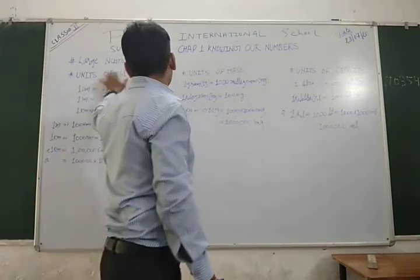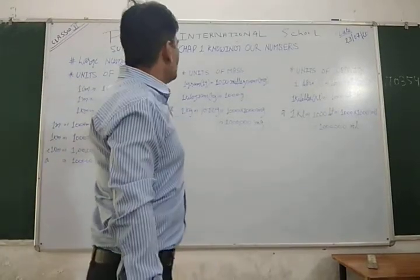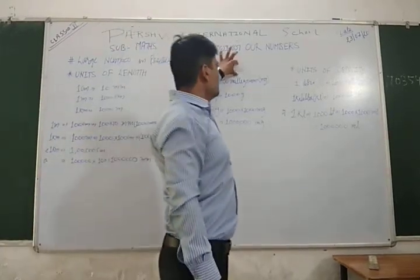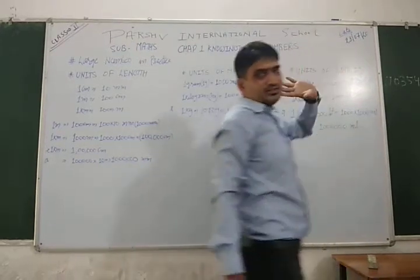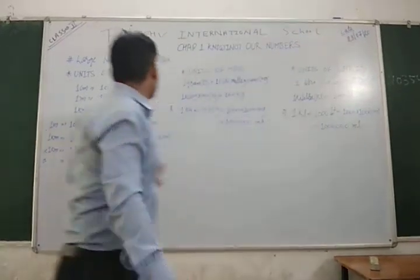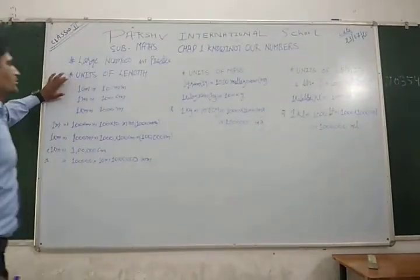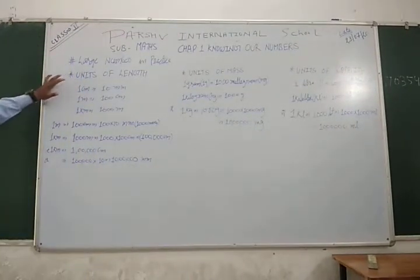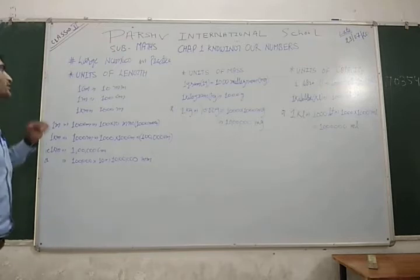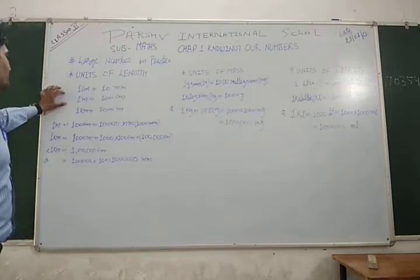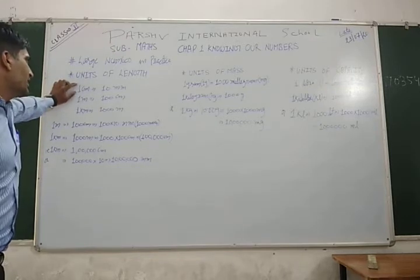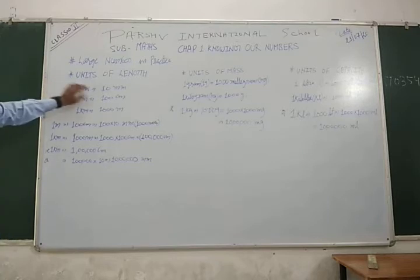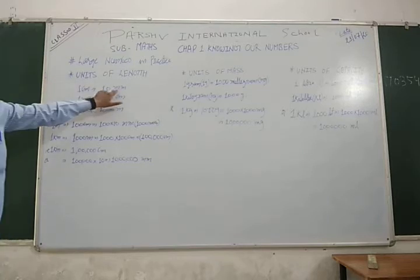It's called units of land, units of mass, and units of capacity. First, the units of land. The first unit is 1 cm. 1 cm squared is 10 mm.